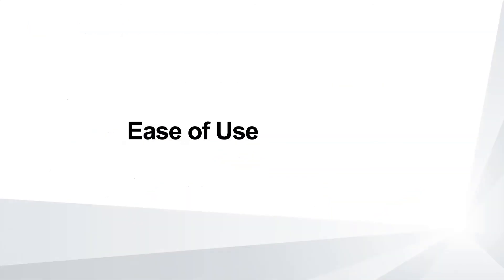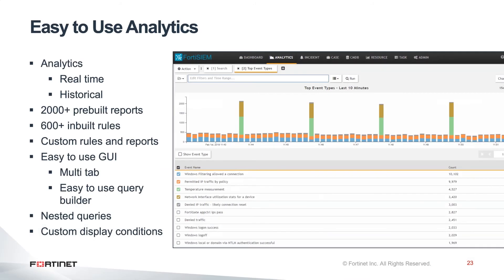One of the things I really like about FortiSIEM is the analytics — it's straightforward for people to pick up and start using. There are over 2,000 pre-built reports and over 600 rules built into FortiSIEM ready to go. These are the real-time correlation rules, and we're soon to add a significant number of additional rules. You can also clone and customize any of these rules or reports to use as a starting place.